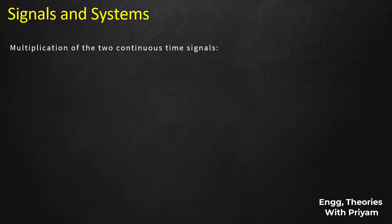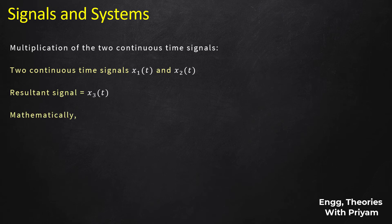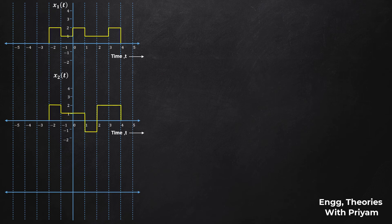For the multiplication of two continuous time signals, we take signals x1(t) and x2(t) and multiply them together. The resultant signal is x3(t), so mathematically x3(t) = x1(t) × x2(t). This multiplication must be performed at every instant of time. The signals x1(t) and x2(t) have amplitude on the y-axis and time t on the x-axis, and the resultant x3(t) is plotted similarly.